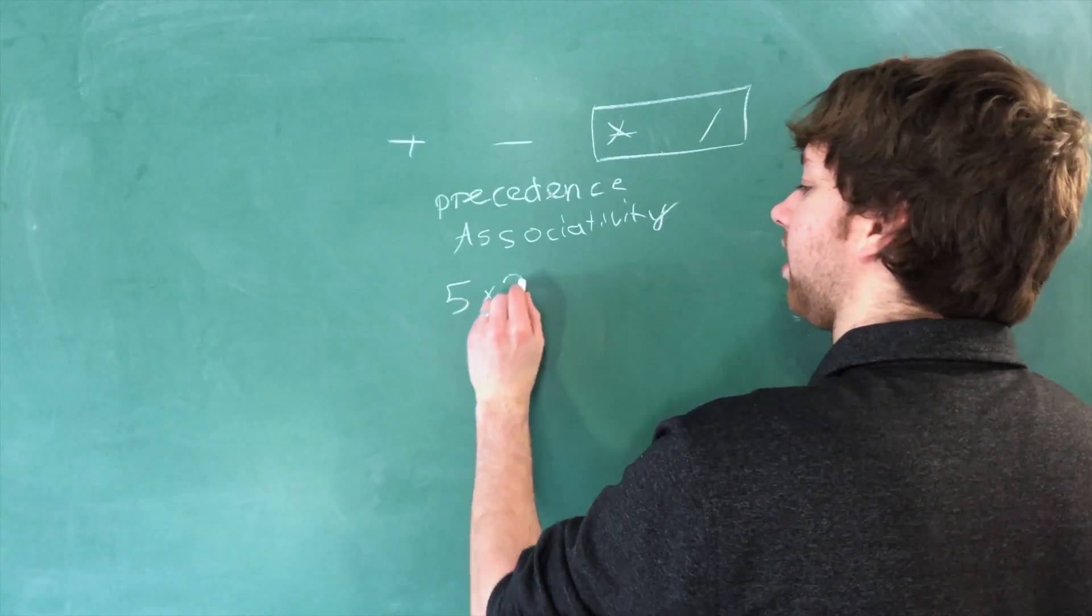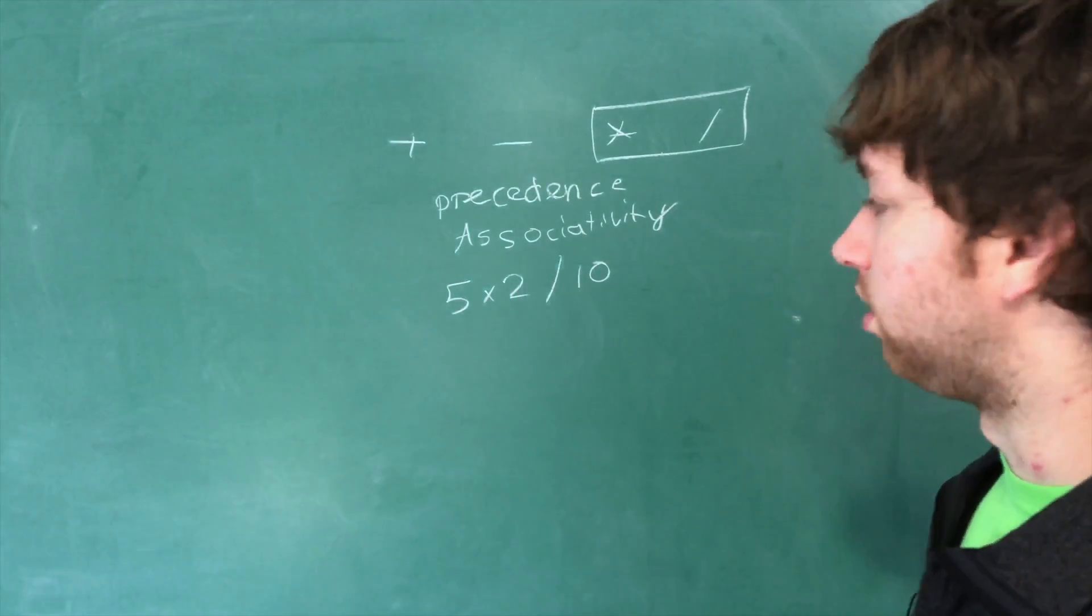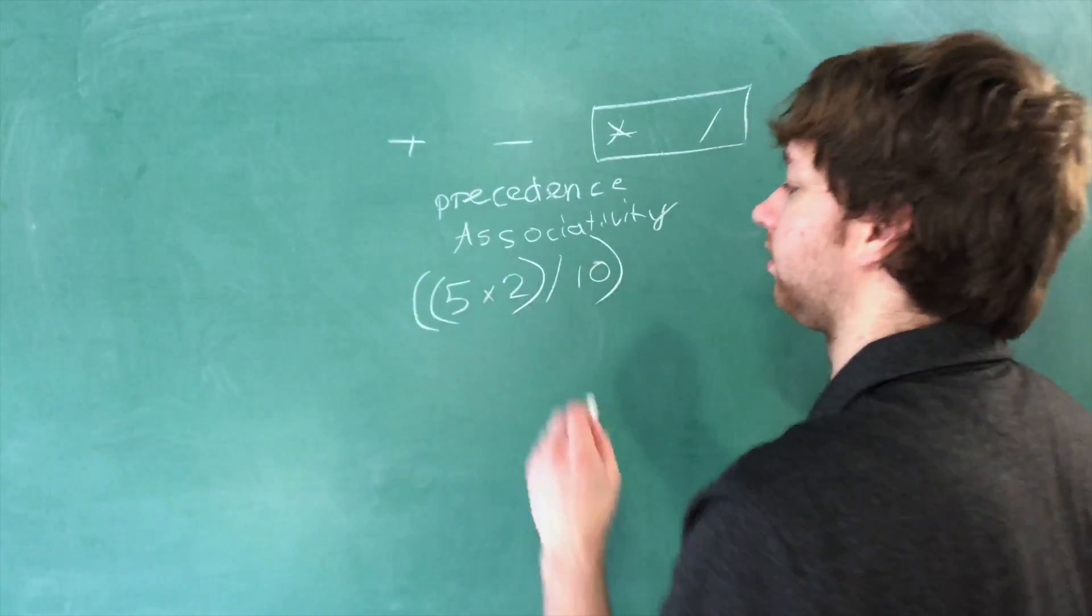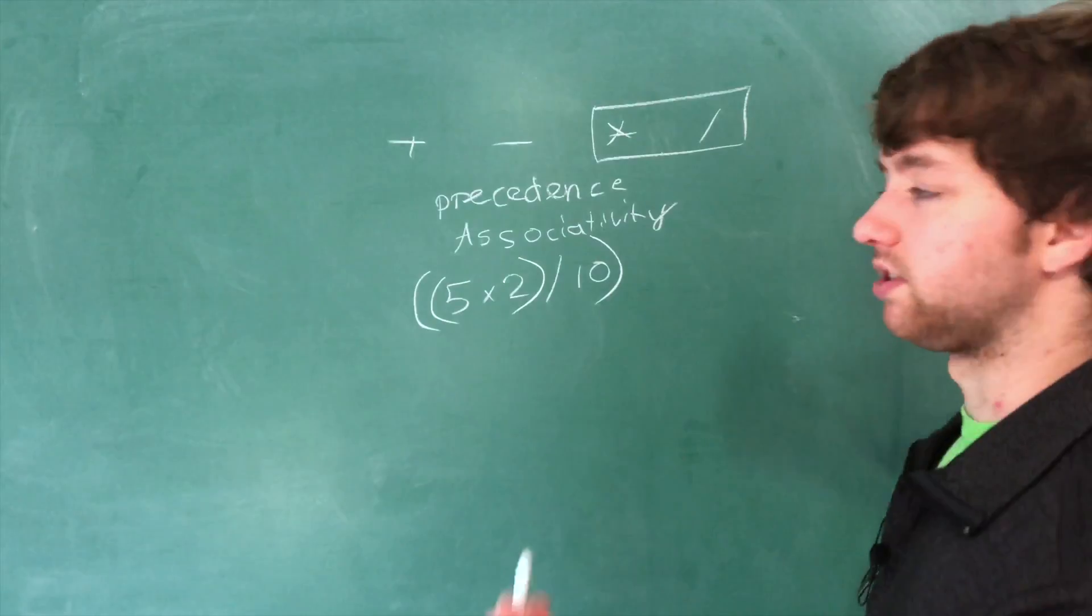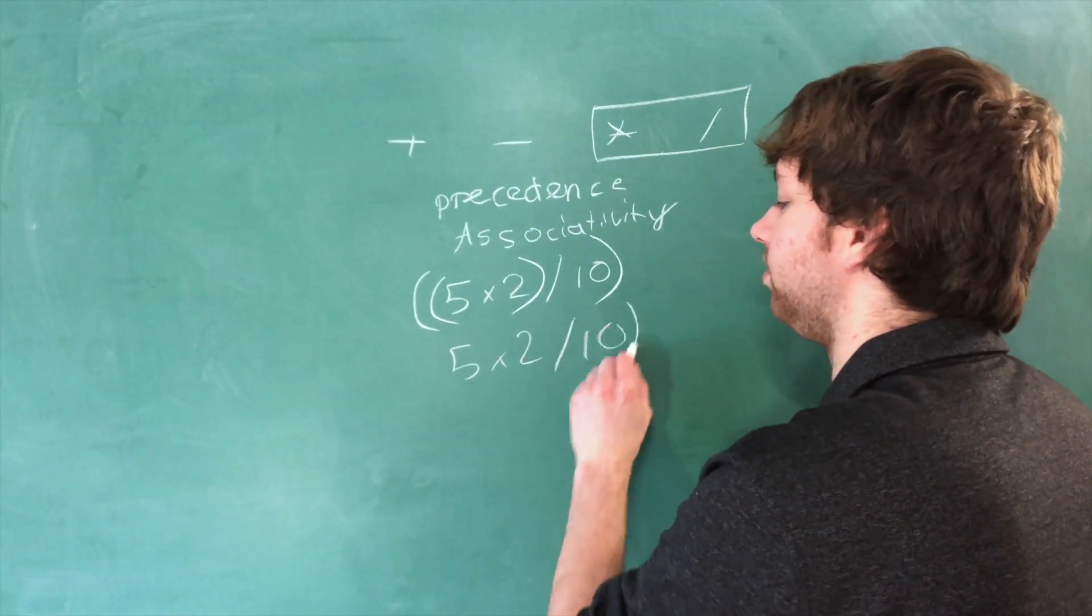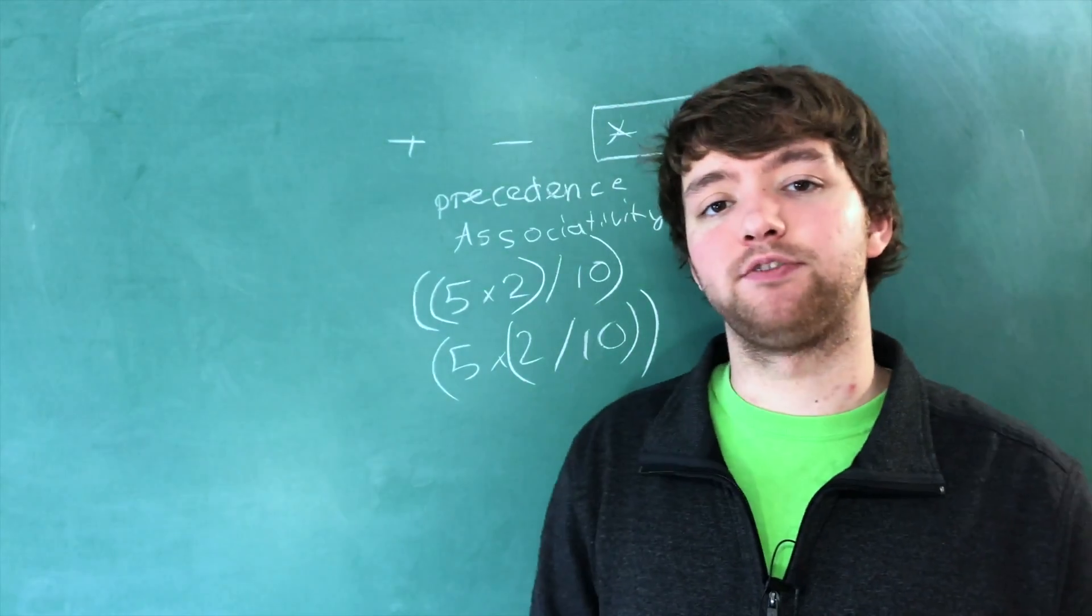If you have 5 times 2 divided by 10, we know that we're going to do this first and then this. But if the associativity was the other way around, it would be like this where we do this section first and then this. Different operators have different associativity.